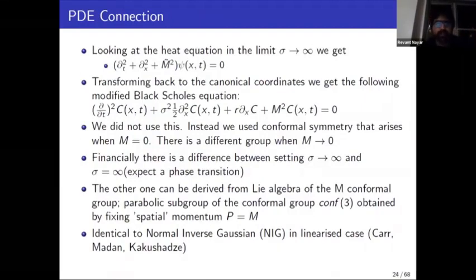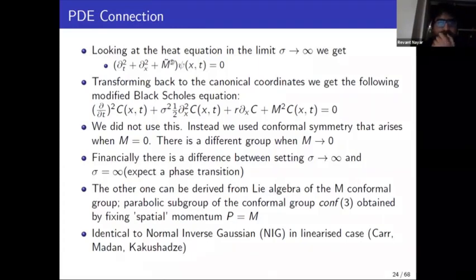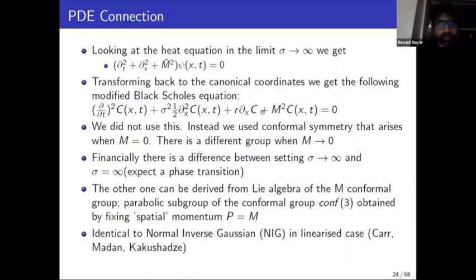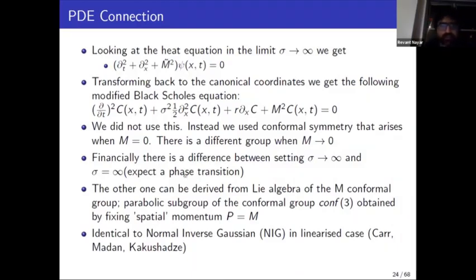You can try to write down PDEs corresponding to Black-Scholes and its non-linear generalizations. If you try to set mass to zero in the deformed version of Black-Scholes, you get a different group than if it tends to zero — it's an order-of-limits issue. Financially, that's the difference between setting volatility to infinity versus making it tend to infinity. If you set volatility to infinity you get the m-conformal group, which you can also get through holographic embedding.